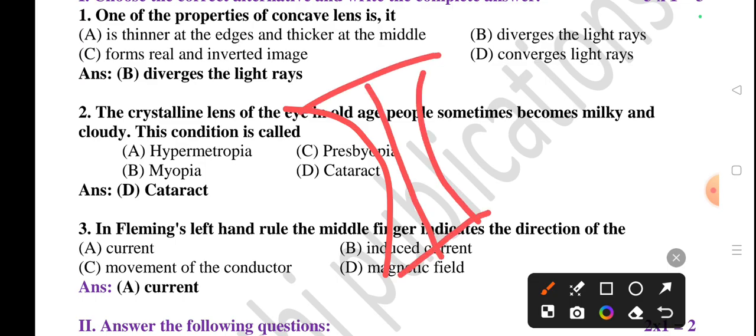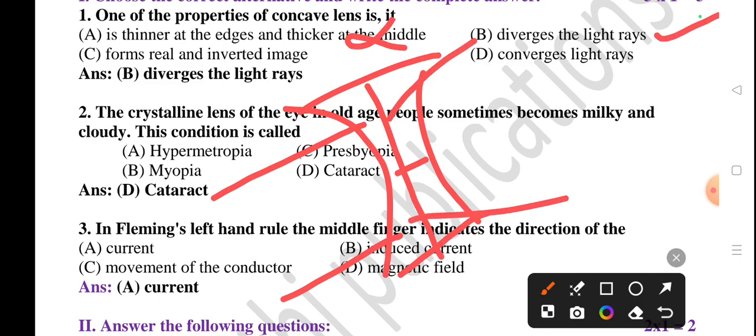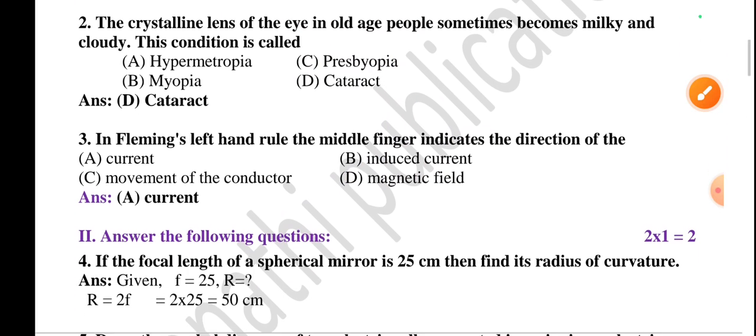This is the structure of concave lens. Concave lens is thinner at the middle and thicker at the edges, so first option is wrong. It diverges light, that's correct, but we have to see the other options also. Forms real and inverted image - no, it forms virtual and erect images, so this concept is also wrong. Converge light rays - this is also wrong.